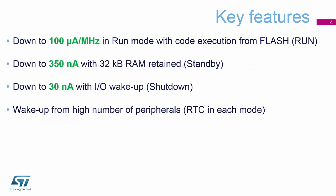The key features of these power modes: we can run down as low as 100 microamps per megahertz when executing code from flash. In standby mode with 32 kilobytes of SRAM still powered, we're down at 350 nanoamps. In shutdown mode, where you can still use an I/O pin to wake the device, we're down at 30 nanoamps — a really excellent low power mode. For most of these modes, the RTC is always available to wake the device if enabled, and on the STM32L4 many more peripherals can also bring the device out of sleep, which we'll cover later.